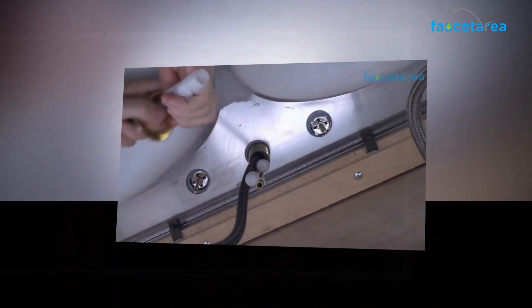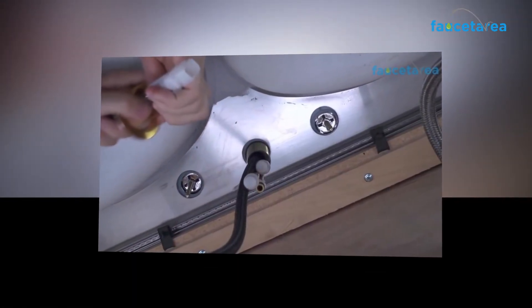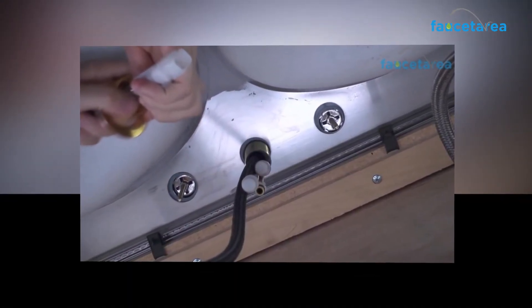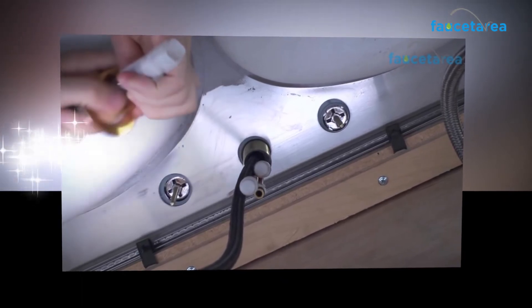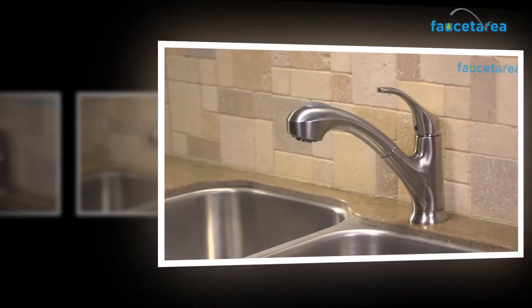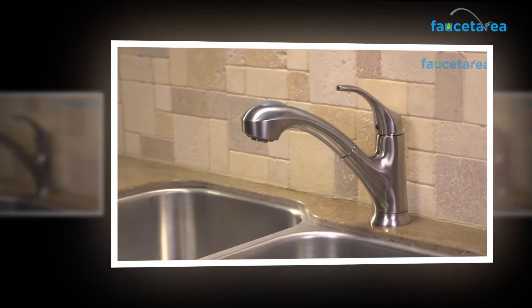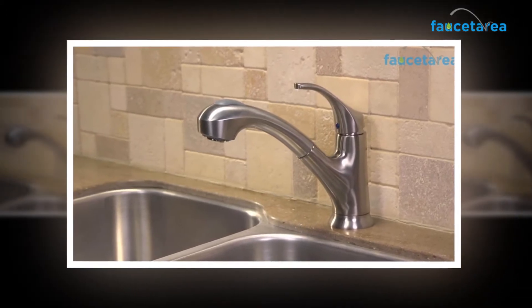Thanks to their intelligent design, pull-out faucets fit well in areas with limited space. Pull-down nozzles have a broad curve and, by providing either 180 or 360-degree pivoting support, account for taking up space.